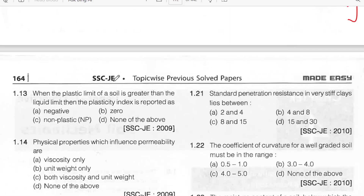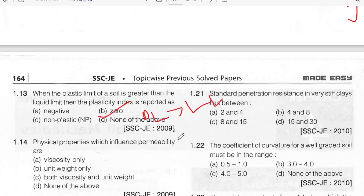When the plastic limit of a soil is greater than the liquid limit, the plasticity index is reported as 0. When PL is greater than LL, the plasticity index equals 0.